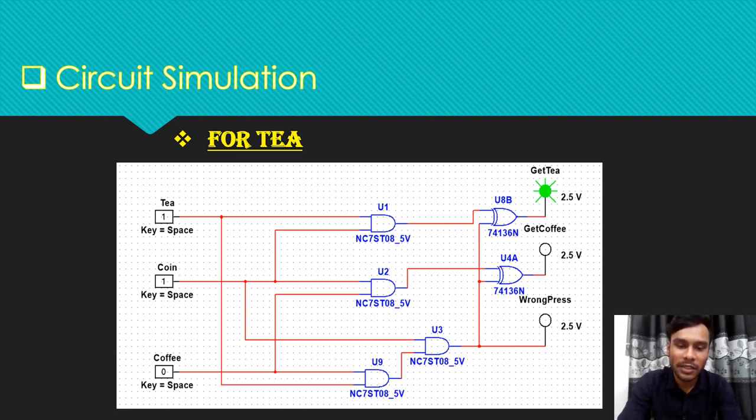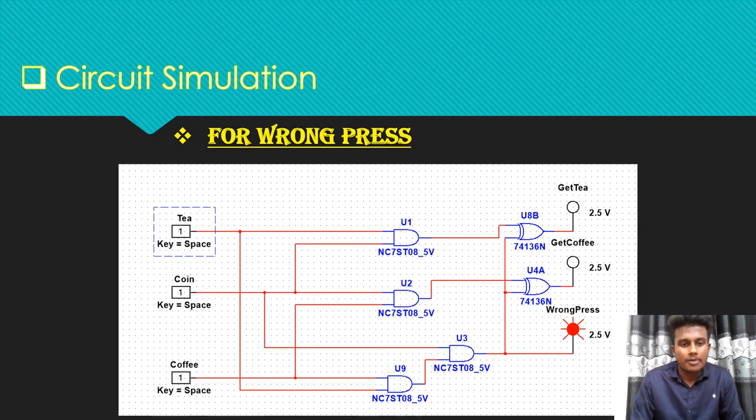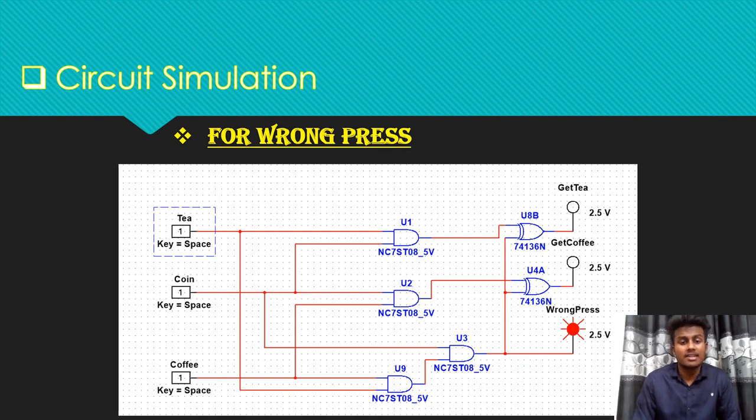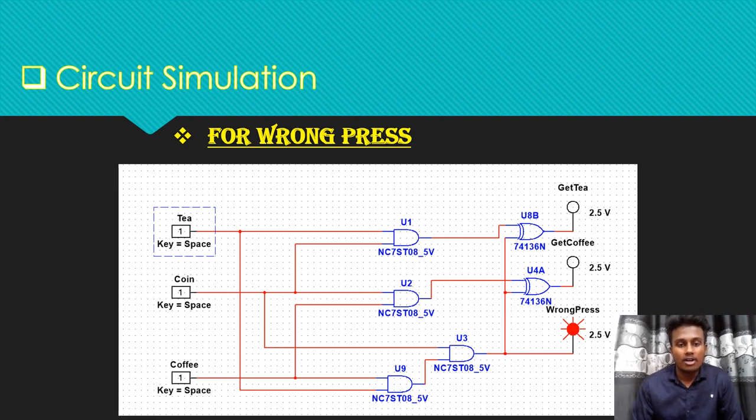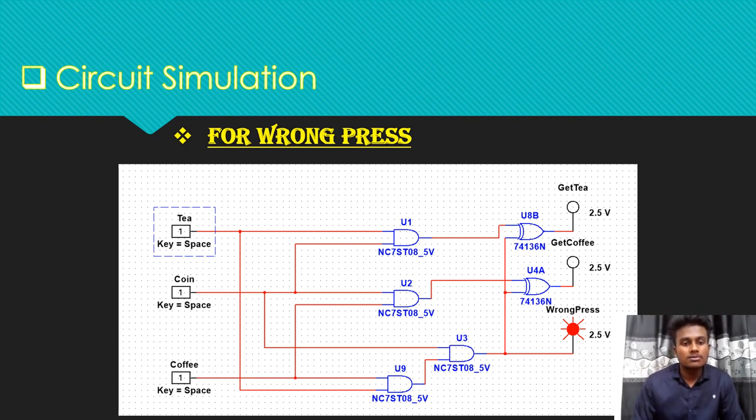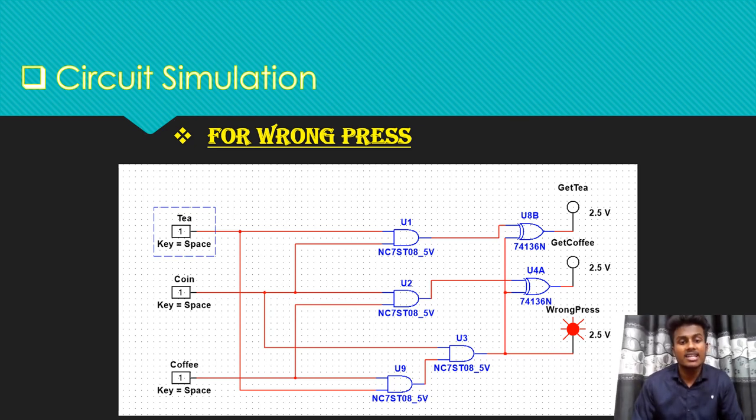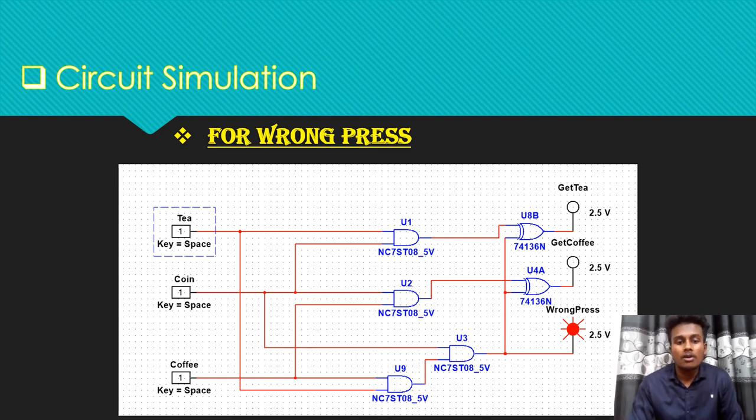Hello everyone, I am Ziyad Musfiq. Now I am going to present this topic. In this circuit, when all of the input signals are one, the machine shows wrong press output, because at this time the output of all AND gates is one and the outputs of all XOR gates are zero. From the simulation we can see that the U3 AND gate is directly connected with wrong press output, so it will activate the wrong press output.